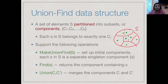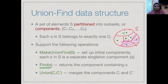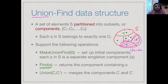We call this data structure union-find because the two operations it supports are called find and union. Find is a query operation: given an element s, it tells you which component s currently belongs to. Union is an update operation which takes two partitions and combines them into a single partition. The initialization operation takes a set of n elements and breaks it into n components, each containing one element.